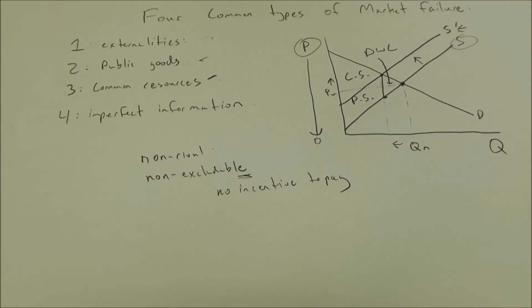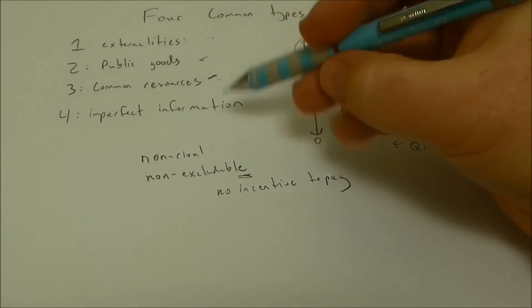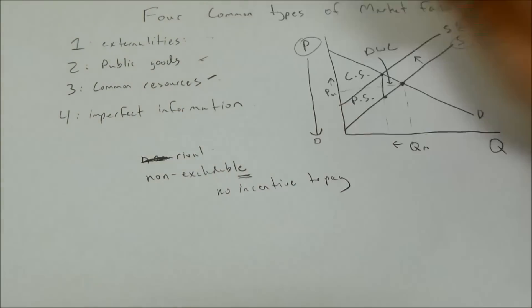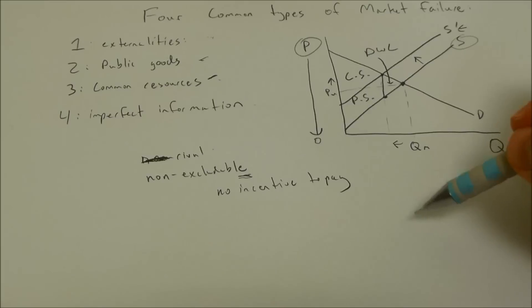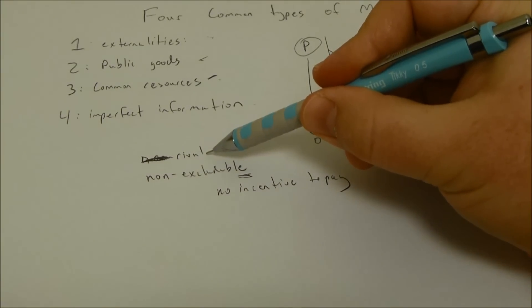Next we have common resources. Common resources are similar to public goods in that they're non-excludable, but they are rival. So imagine a road that doesn't have any exclusions. People can drive on it. Maybe so many people drive on it that it becomes degraded.